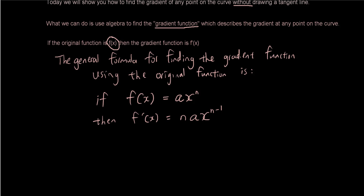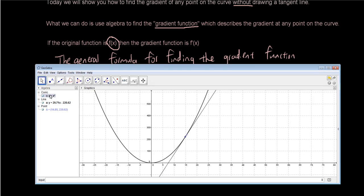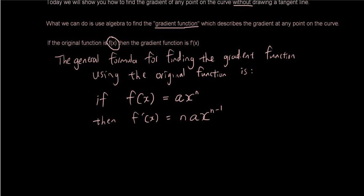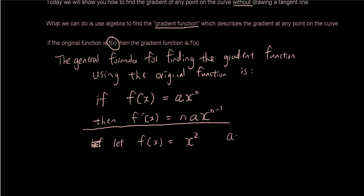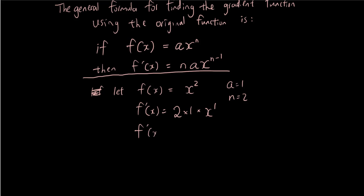Let's try that on our curve. Our original function is y equals x squared, so let f of x equal x squared. Remember, when we have x squared, a is just 1 and n is 2. Then f dash x, according to our formula, we bring n to the front — so we bring 2 to the front — times by a which is 1, times by x to the power of n minus 1. Since n is 2, n minus 1 is 1. So using the formula, we've just found the gradient function to be 2x.